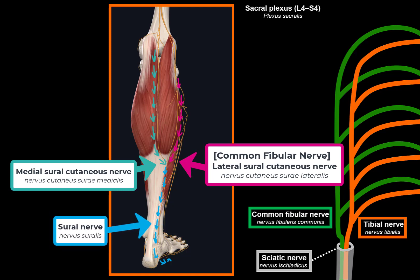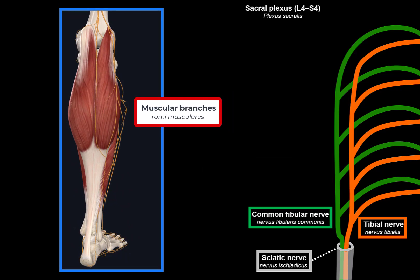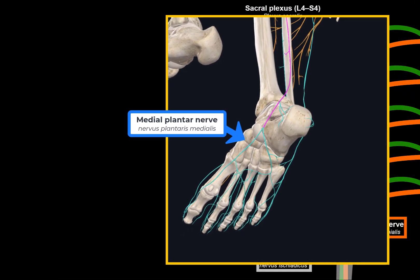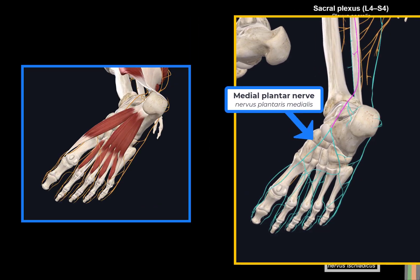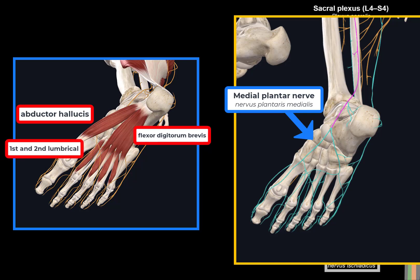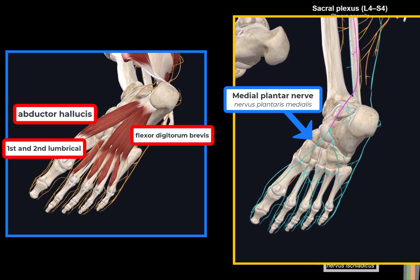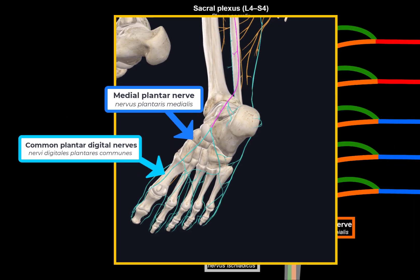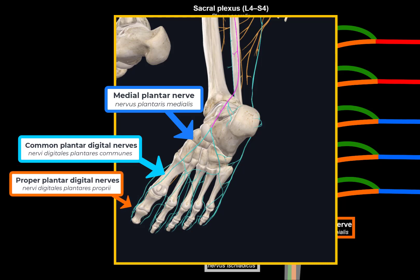The medial sural cutaneous nerve joins the lateral sural cutaneous nerve from the common fibular nerve to form the sural nerve, which provides somatosensory innervation of the calf and the lateral side of the heel. The tibial nerve also gives off muscular branches innervating the posterior muscles of the calf, and the medial plantar nerve — a special nerve that is both cutaneous and motor, supplying the abductor hallucis, flexor hallucis brevis, flexor digitorum brevis, and the first and second lumbricals.